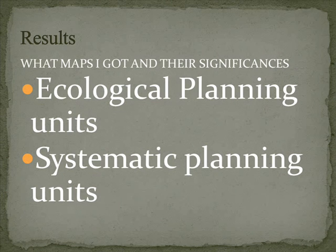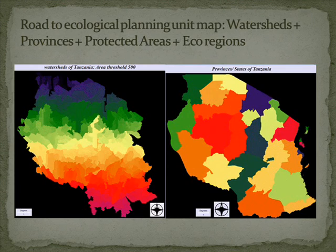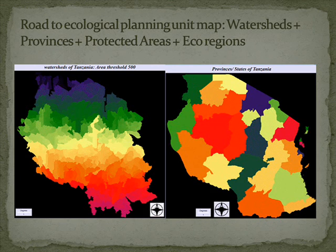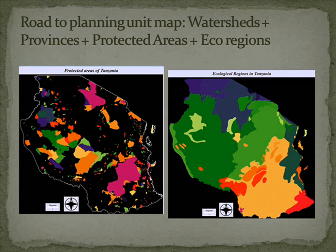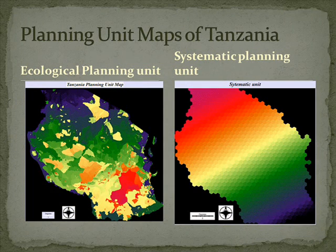The ecological planning unit and the systematic planning unit maps are raster layers that are similar yet different. The roads to the ecological planning units require an overlay of the watershed map, the provinces map, ecoregions, and the protected areas. First to be overlaid was the watershed map and the provinces map, secondly the ecoregions, and lastly the protected areas. The result was the ecological planning unit on the left and the systematic planning unit on the right.